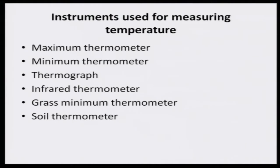Coming to the instruments used to measure temperature: the maximum thermometer records the maximum temperature prevailing in a particular day, and uses mercury. The minimum thermometer records the lowest temperature, normally at 5:30 AM, and uses alcohol. There is also a thermograph with rotating charts operated mechanically or by battery. An infrared thermometer, when pointed at a plant, uses a sensing mechanism — by noting the reading, you can determine if the plant is suffering from water stress or what temperature the plant has.